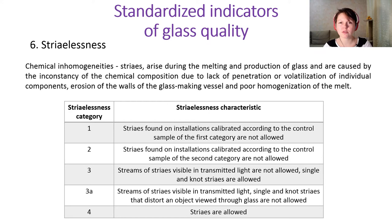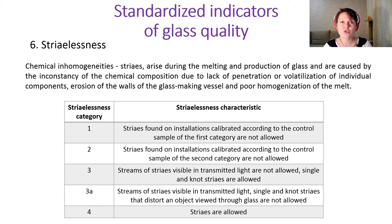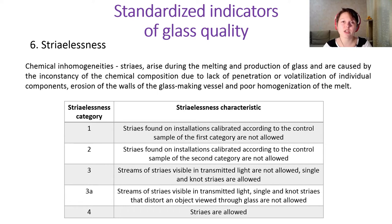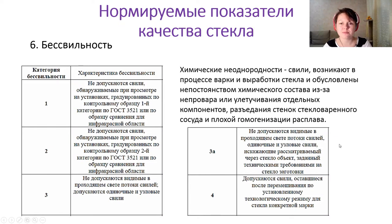The next very important indicator is the presence or absence of striae, called strialessness. Striae are inhomogeneities in glass that have a different chemical composition than the original glass. There are several categories of striae: the first two categories do not allow striae at all, but the last category allows them. In Russian this is called 'besvinist.' Here you can see a photo of many striae in the glass volume.